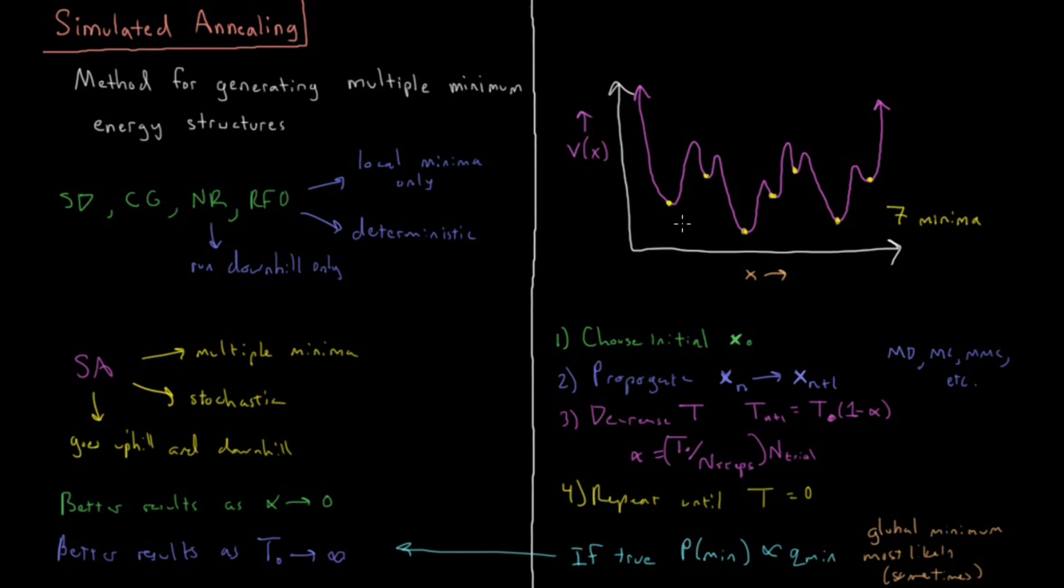So that's simulated annealing and it has the main benefit that there are multiple minima you can get and you can get minima that you didn't necessarily anticipate by your choice of initial geometry.